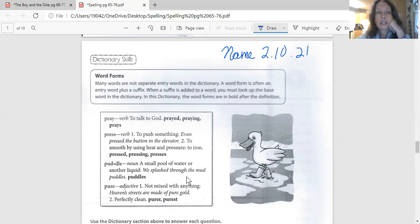Well, the first thing I see when I look is I see my title. My title says Dictionary Skills. And then I've got an information box. It's my information box over here. And it says Word Forms. Many words are not separate entry words in the dictionary. A word form is often an entry word plus a suffix. When a suffix is added to a word, you must look up the base word for the dictionary. In this dictionary, the word forms are in bold. It is bold after the definition. Let's listen and repeat those directions together, shall we?